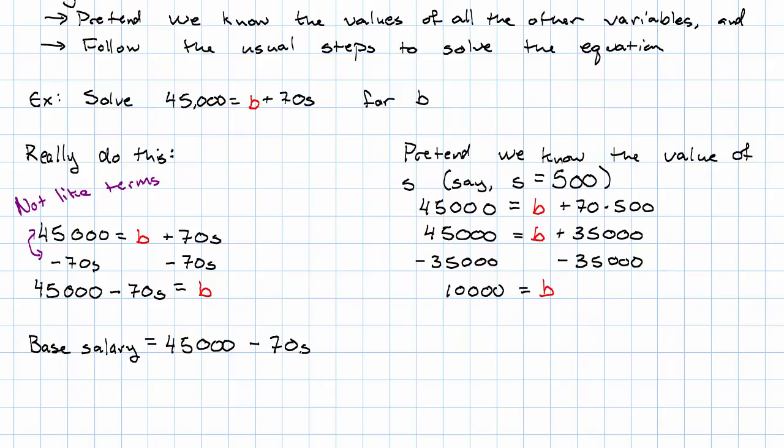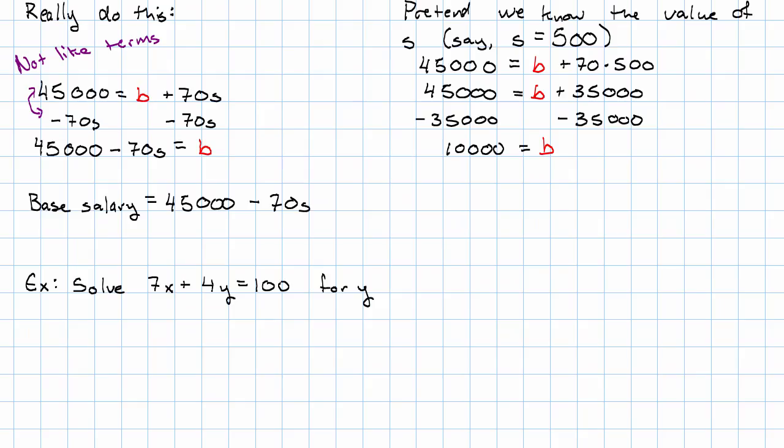Let's see another example where solving for one of the variables is a little bit more complicated. I'm not going to give you a story here. I'm just going to give you the algebra. Let's say we want to solve the equation 7X plus 4Y equals 100 for Y.